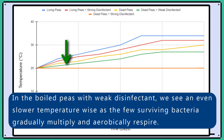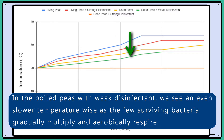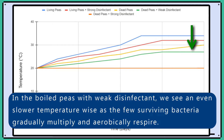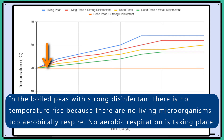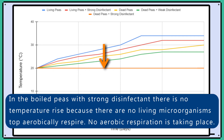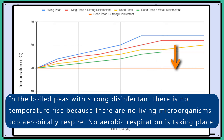In the boiled peas with weak disinfectant, we see an even slower temperature rise as a few surviving bacteria gradually multiply and aerobically respire. In the boiled peas with strong disinfectant, there is no temperature rise because there are no living microorganisms to aerobically respire. No aerobic respiration is taking place.